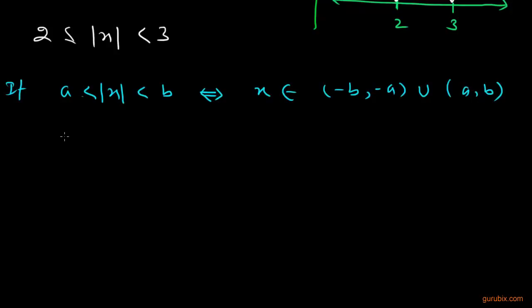By using this formula, x will belong to -b, which means [-3, -2] (and 2 is included), union [2, 3). So this is the solution of the question. Thank you.